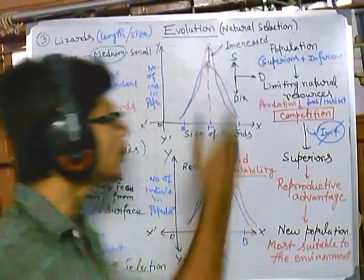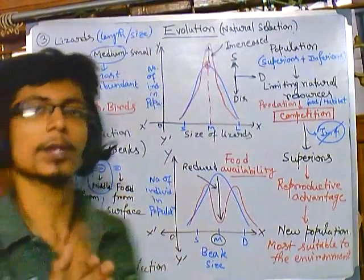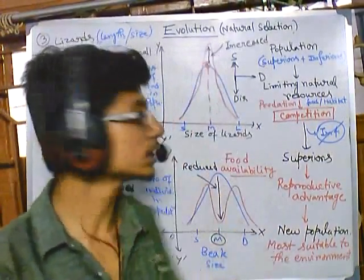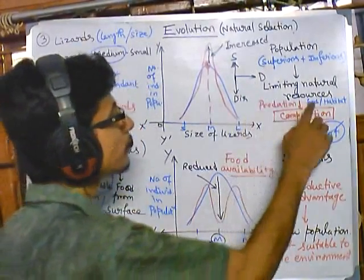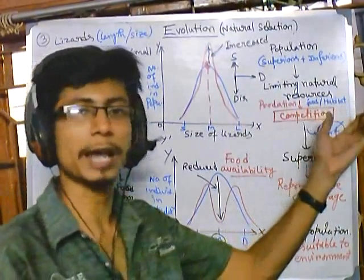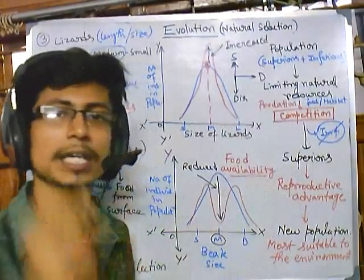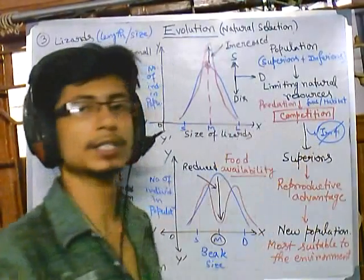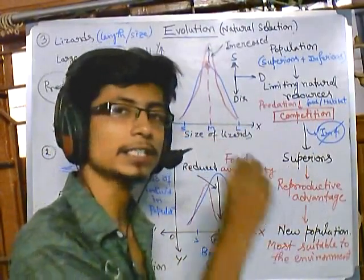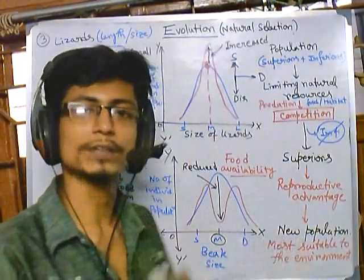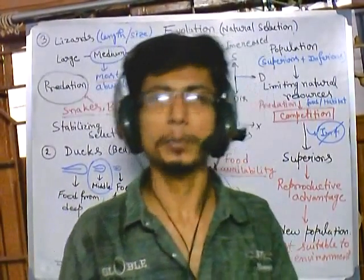From the graphs, remember the x-axis has the different trait values and the y-axis has the number of individuals in the population — that's how evolution occurs. Nature places hurdles such as food limitation, habitat limitation, and predation, leading to competition. Superior quality traits are selected, giving those organisms a reproductive advantage, and a new population of that superior quality emerges. That is how natural selection occurs.